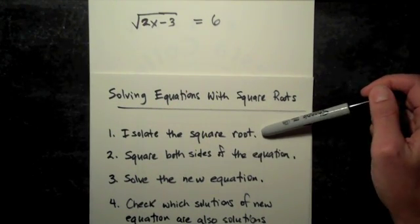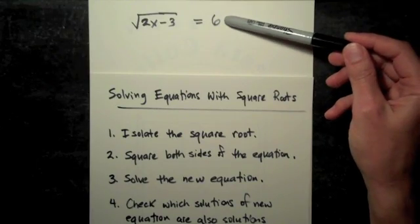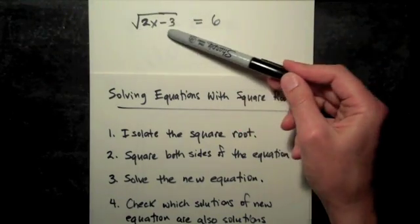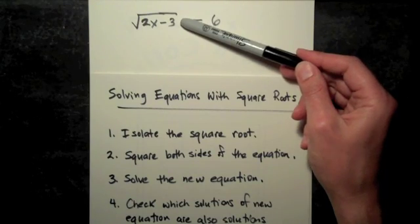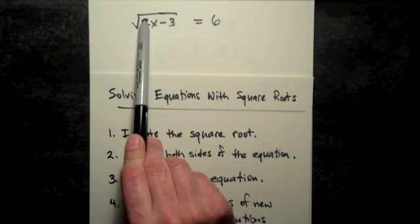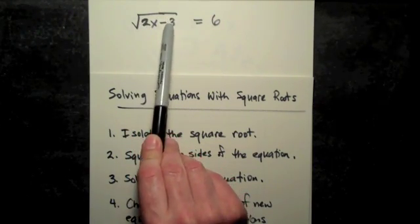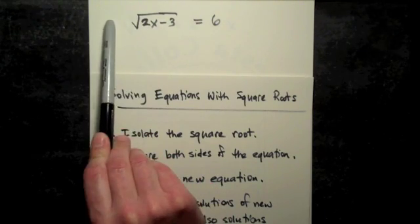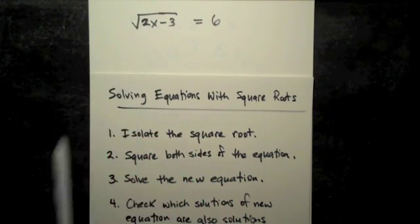Step one, isolate the square root. In this example, the square root is already isolated. It's sitting all by itself on the left side of the equation. This entire expression is already sitting under the radical, so there's nothing outside the radical, no other terms, no coefficient.